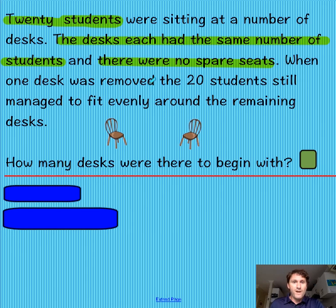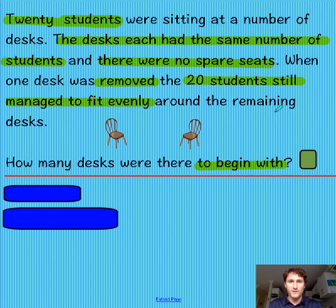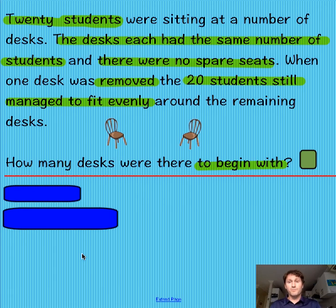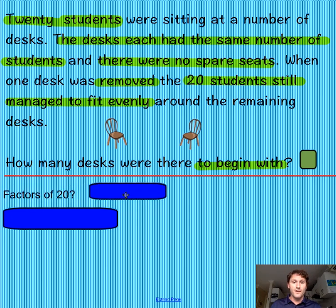Let's look further at the problem. When one desk was removed, the 20 students still managed to fit evenly — evenly is an important word — around the remaining desks. And our question: how many desks were there? So as I said, we should be thinking along the lines of multiplication and division, equal groups or even groups. We know we've got 20 students, so our key number is 20. We're trying to split these 20 students among a number of desks, so we're obviously looking for the factors of 20.